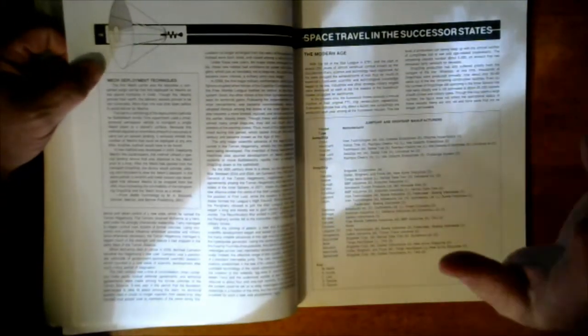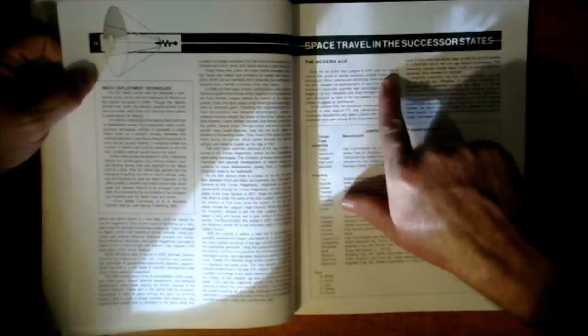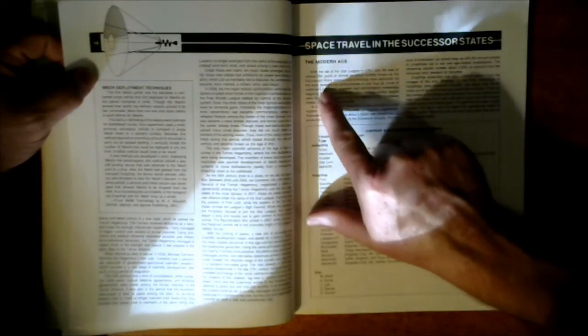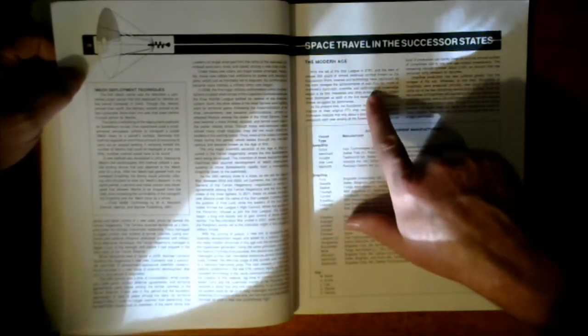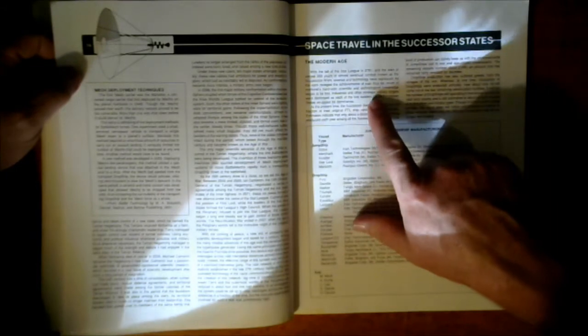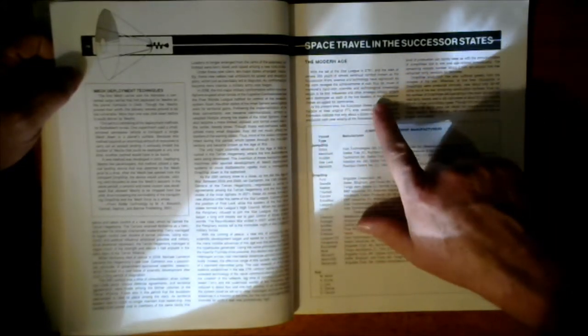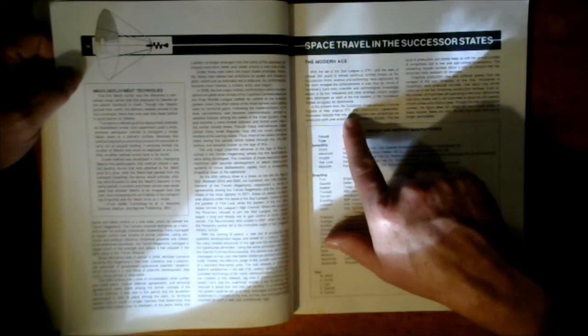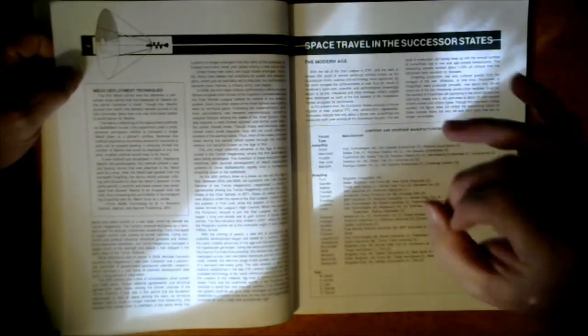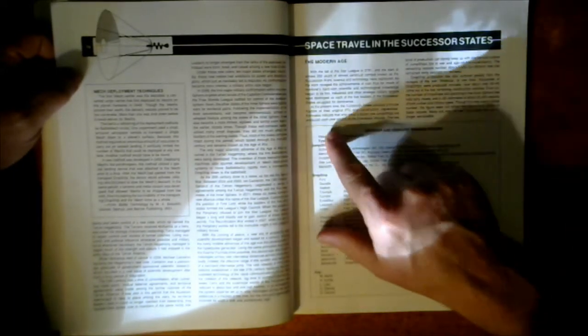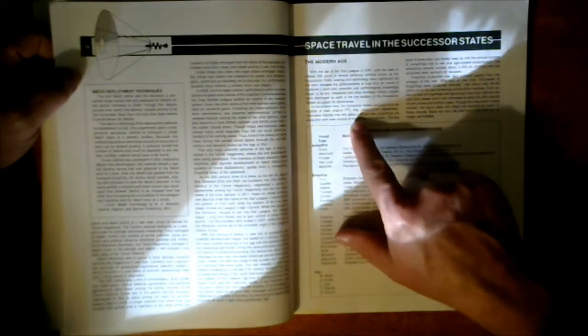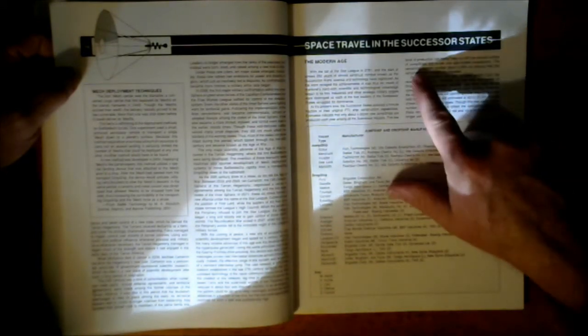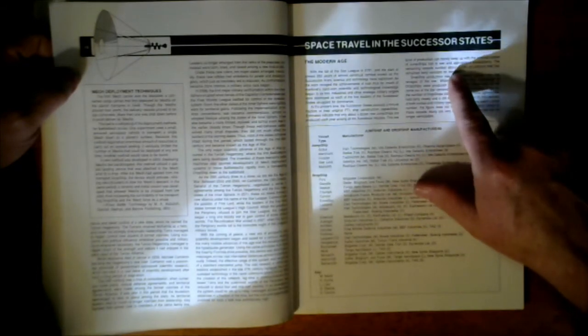I'll read this: With the fall of the Star League in 2781 and the start of almost 250 years of continual combat known as the succession wars, science and technology have regressed. Much of mankind's hard-won scientific and technological knowledge began to be lost. Industries and other strategic military targets were destroyed as each of the five leaders of succession states struggled for dominance. At present time, the successor states possess a minute fraction of the original FTL ship construction capacity.